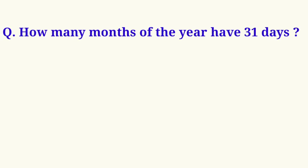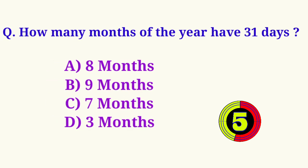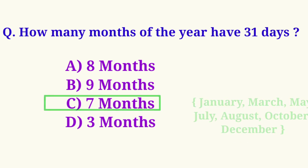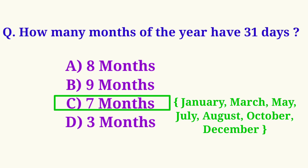How many months of the year have 31 days? Option C, 7 months, is the correct answer.